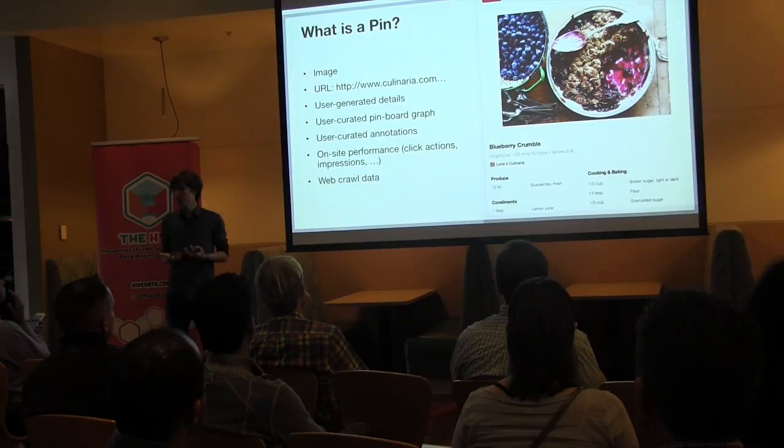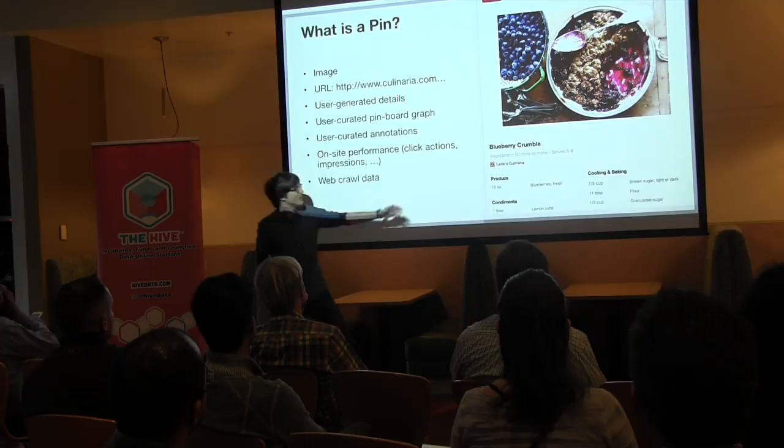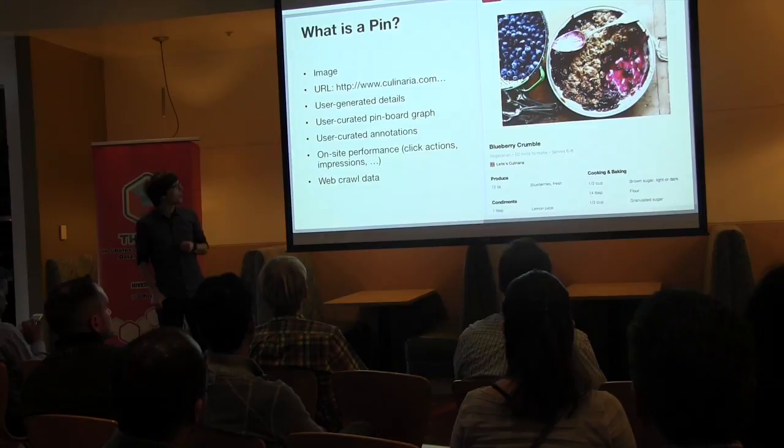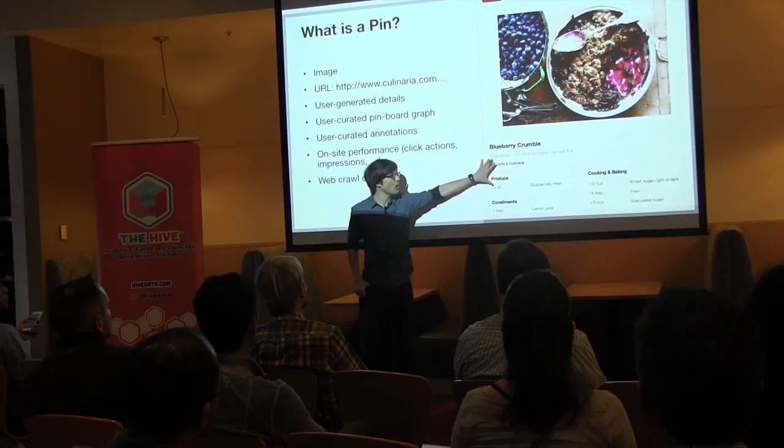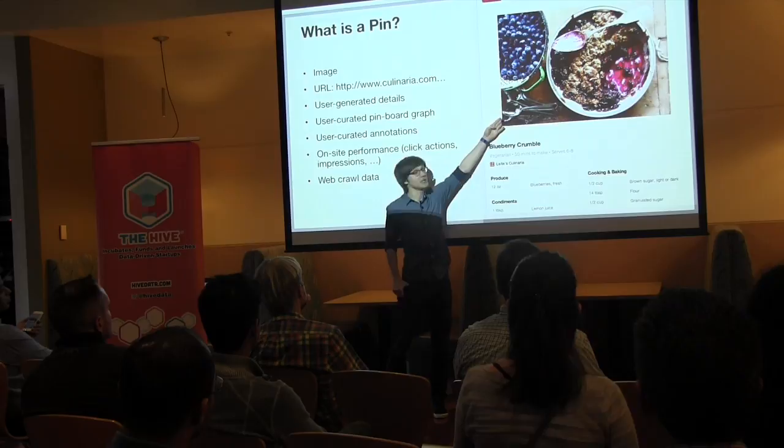This is an example of a pin. A pin is nothing else than a visual bookmark. It has an image and it has a pointer — a URL to the target web page somewhere on the web. Of course, internally at Pinterest we know much more about it. For example, sometimes we go and actually parse and crawl the target web page to extract the recipe for this particular dish.